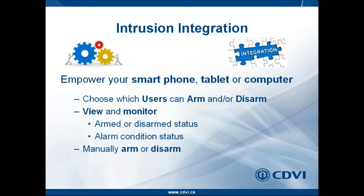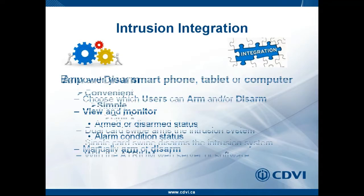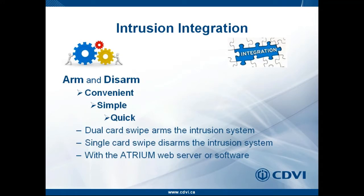Once integration is complete, you will be able to see if the system is armed or disarmed and whether the building is in alarm. You can manually arm and disarm through a button on the web interface or PC software. For card-based control, you double-swipe your card — swiping the same card twice at the reader within five seconds — to arm the alarm system. A single card swipe will disarm the alarm system if you have disarming rights.